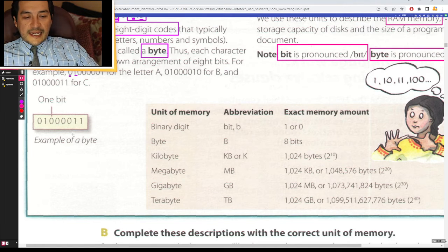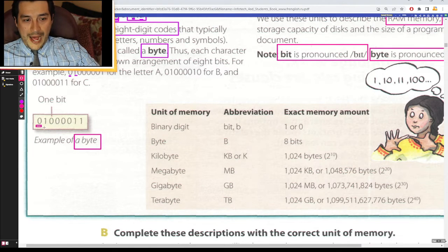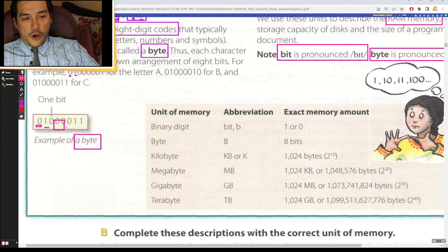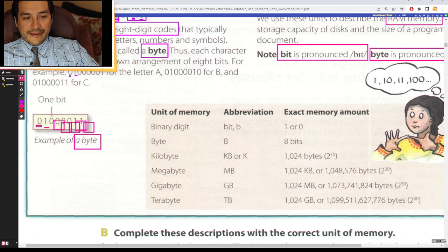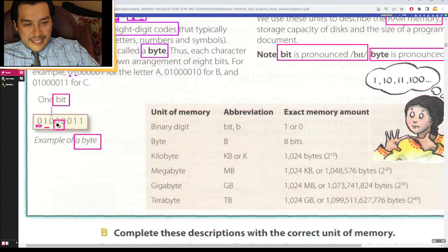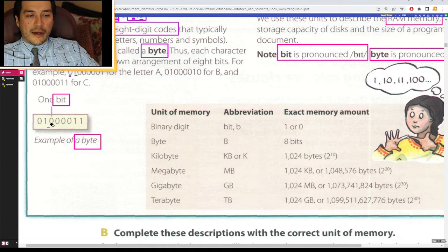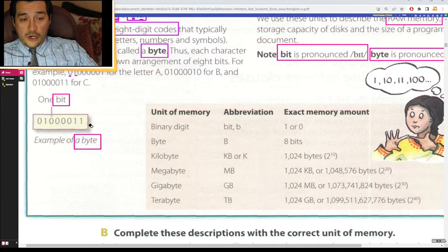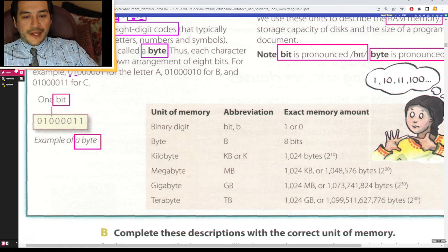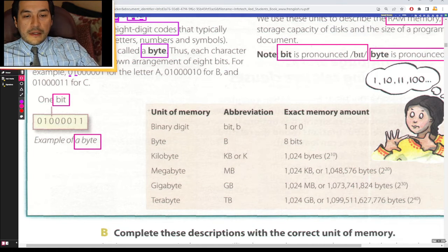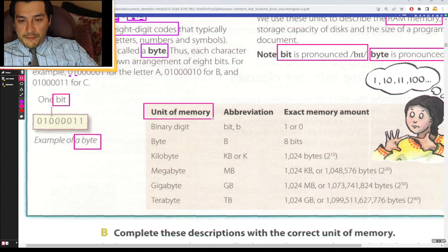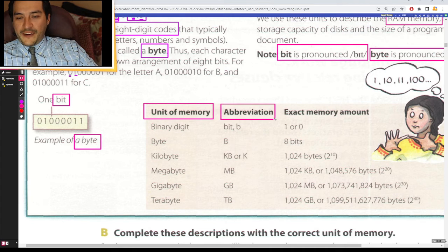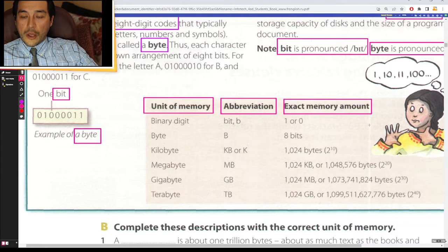This is an example of a byte: one, two, three, four, five, six, seven, eight. Eight bits. The bits in this byte are 01000011. Let's look at the unit of memory, the abbreviation, and the exact memory amount.